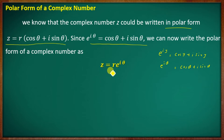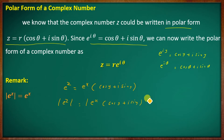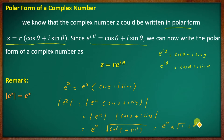Remark: the modulus of e raised to z equals e raised to x. Since e raised to z equals e raised to x into (cos y + i sin y), the modulus is e raised to x times the modulus of (cos y + i sin y), which equals e raised to x times √(cos²y + sin²y), equal to e raised to x times 1. So |e^z| = e^x, which is always positive.